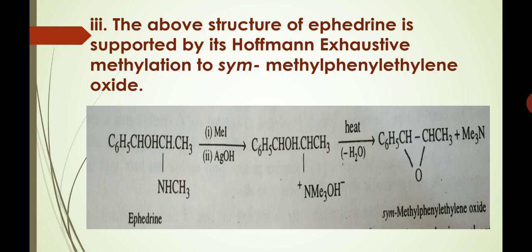This proposed structure of ephedrine is supported by its Hofmann exhaustive methylation to symmetrical methyl phenyl ethylene oxide. When ephedrine is subjected to Hofmann exhaustive methylation, in the first step it is treated with methyl iodide, and in the second step it is treated with AgOH. This gives a quaternary ammonium compound which, on heating, eliminates a molecule of water to give symmetrical methyl phenyl ethylene oxide.